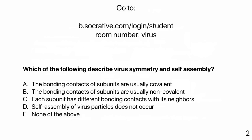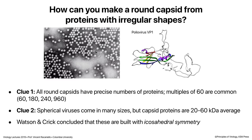Question: which of the following describes virus symmetry and self-assembly? A, the bonding contacts of subunits are usually covalent; B, the bonding contacts of subunits are non-covalent; C, each subunit has different bonding contacts with its neighbors; D, self-assembly of virus particles does not occur; E, none of the above. The correct answer is B — the bonding contacts are usually non-covalent. A is wrong because covalent is not correct. C is not correct — none of you picked that. D — obviously the opposite is true, self-assembly does occur.